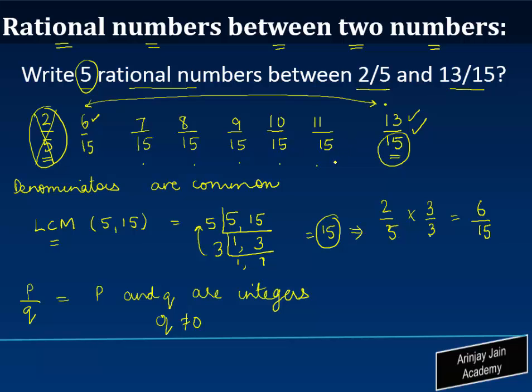There is another common method of finding out a rational number between two numbers, which is, for example, once you've converted this into common denominators, you can find it out by (6/15 + 13/15) divided by 2.